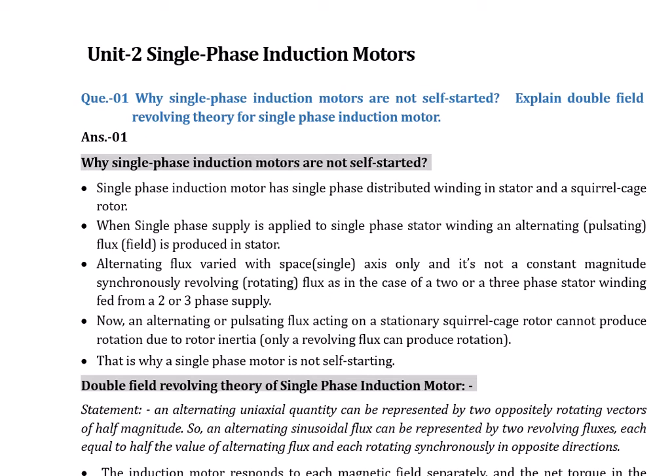A single-phase induction motor has a single-phase distributed winding in the stator and a squirrel cage rotor — same as a three-phase motor, except three-phase has a three-phase distributed winding in the stator with the same squirrel cage rotor. When single-phase supply is applied to the stator winding, an alternating or pulsating flux is produced in the stator. This flux varies along a single axis only, and is not a constant-magnitude synchronously revolving flux as in the case of two or three-phase stator windings.